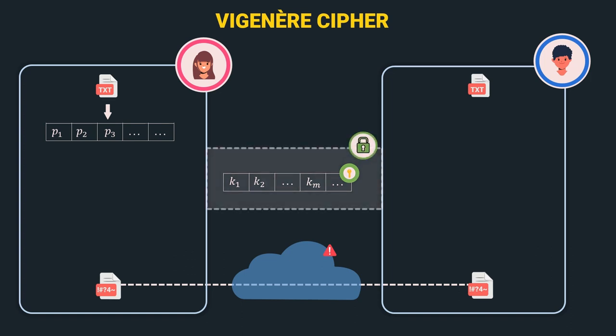For encryption, Alice takes the plain text and the key stream and performs a bitwise addition operation limited to mod 26. Alice performs this operation to generate the cipher text, represented as c1, c2, c3, and so on. This cipher text is then sent to Bob via an insecure public channel.